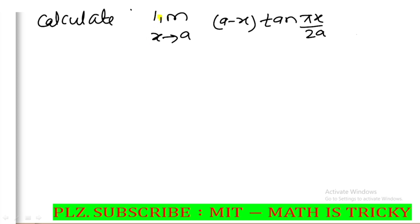The next question is: limit as x tends to a of (a minus x) tan(πx/2a). We will apply the same formula. Substituting x equals a gives 0 by 0. We will change the form — it becomes an infinity form.